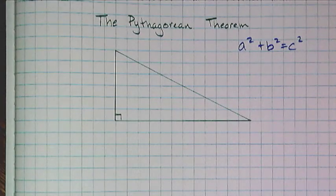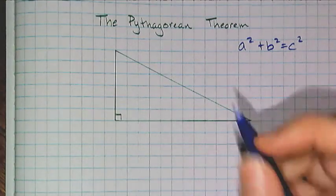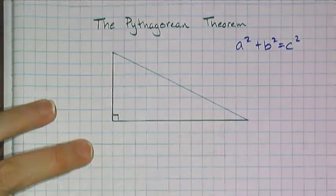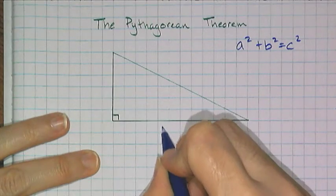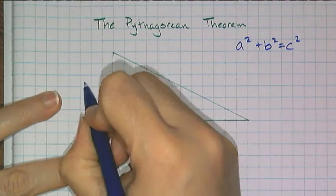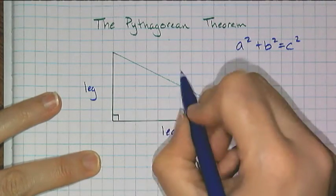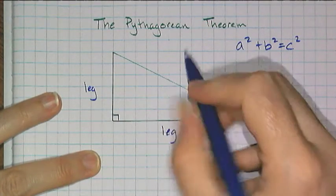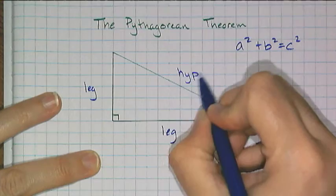The theorem has to do with the sides of a right triangle. Remember, right triangles have 90-degree angles. And we're going to call the two sides that make up the right angle legs and the side opposite the right angle, the hypotenuse.